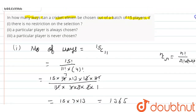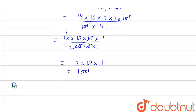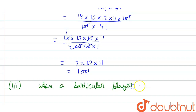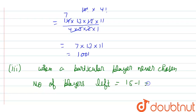Now condition three: a particular player is never chosen. When a particular player is never chosen, we remove that player from consideration. So the number of players left is 15 minus 1 = 14.